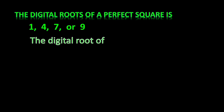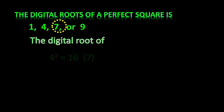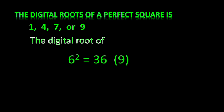The digital root of 1² is 1, 2² is 4, and 3² is 9 — these are already single digits so the digital root is the same. 4² equals 16, and 6 plus 1 equals 7, so 7 is the digital root of 4². 5² equals 25, and 5 plus 2 equals 7, so 7 is the digital root of 5². 6² equals 36, and 3 plus 6 equals 9.